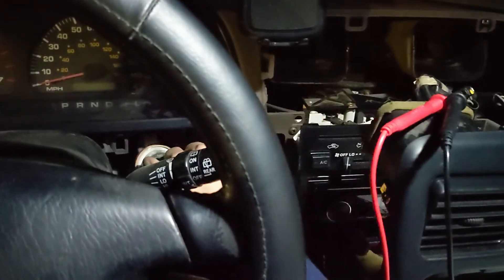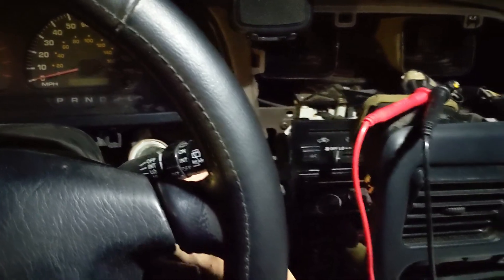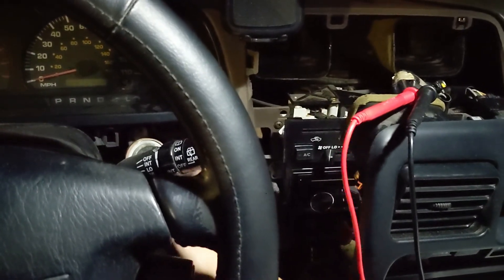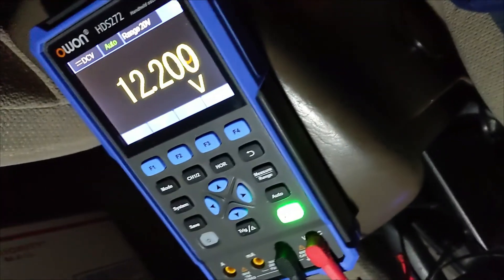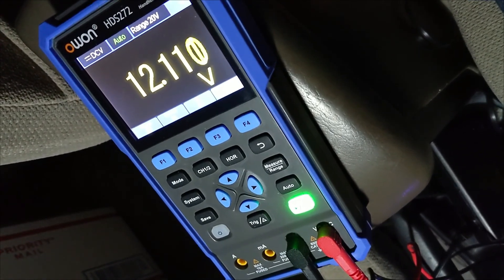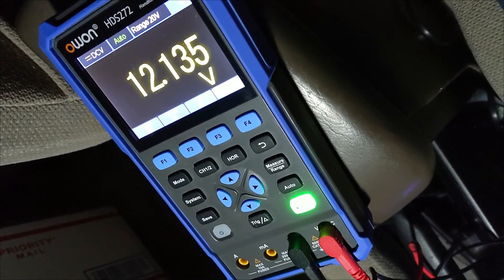Now, if I go ahead and turn it on to ACC, or even to the next position, the start or crank it, as you can see, we get 12 volts. So that line basically turns off the clock so it doesn't drain your battery all night.